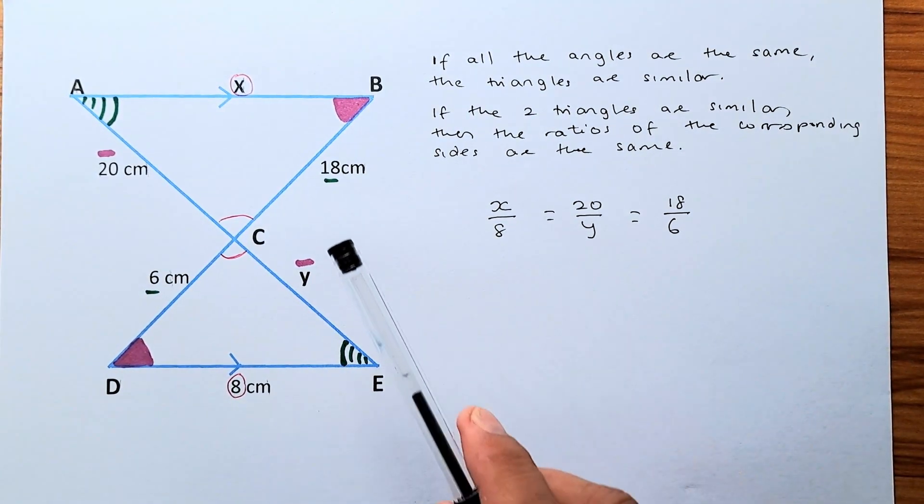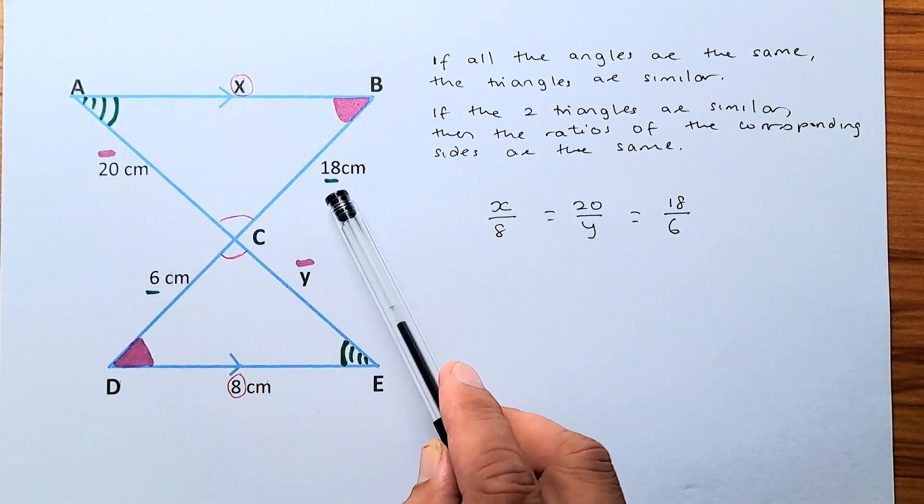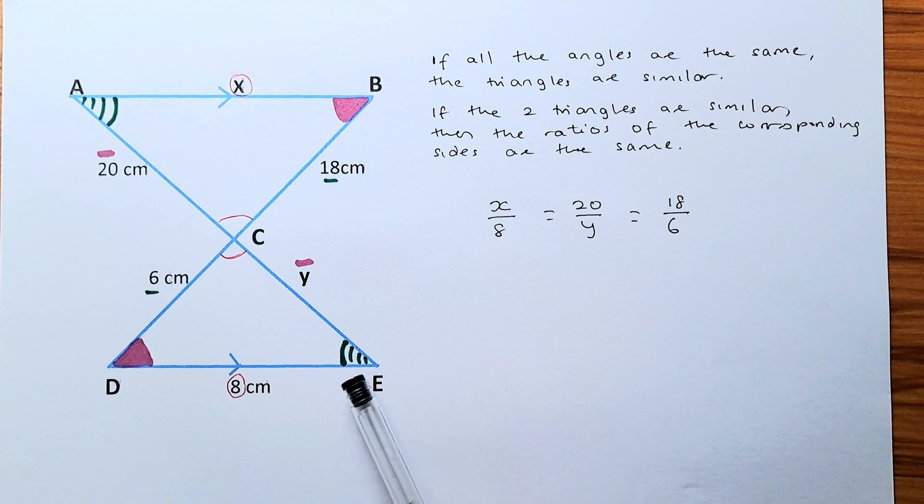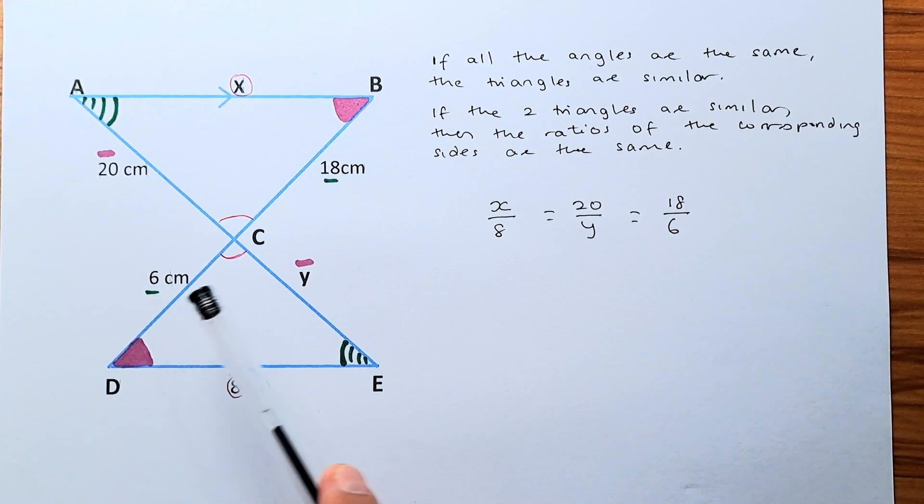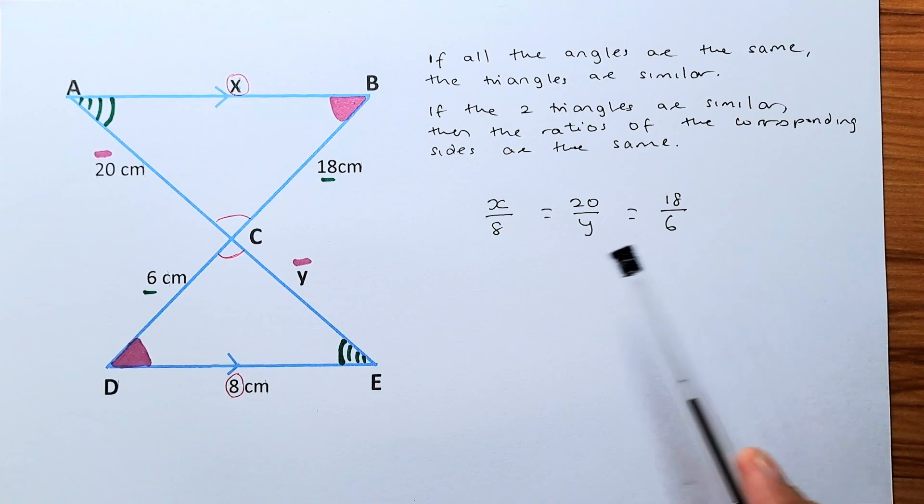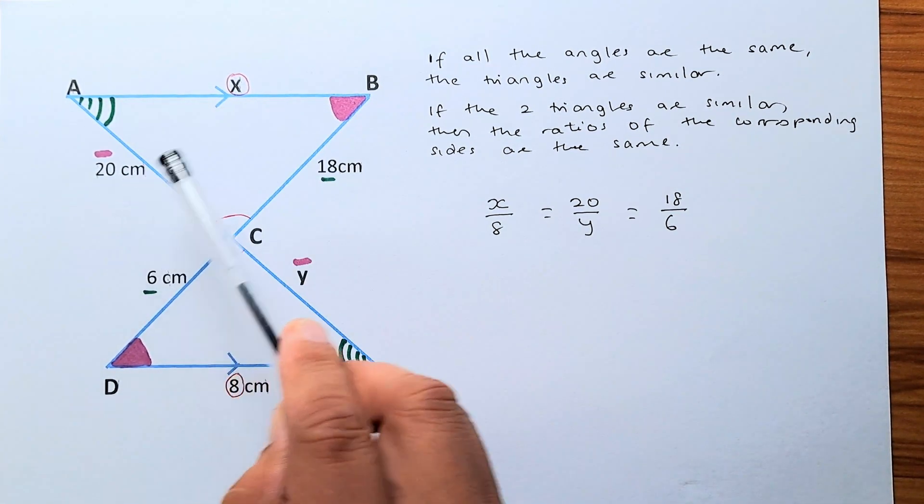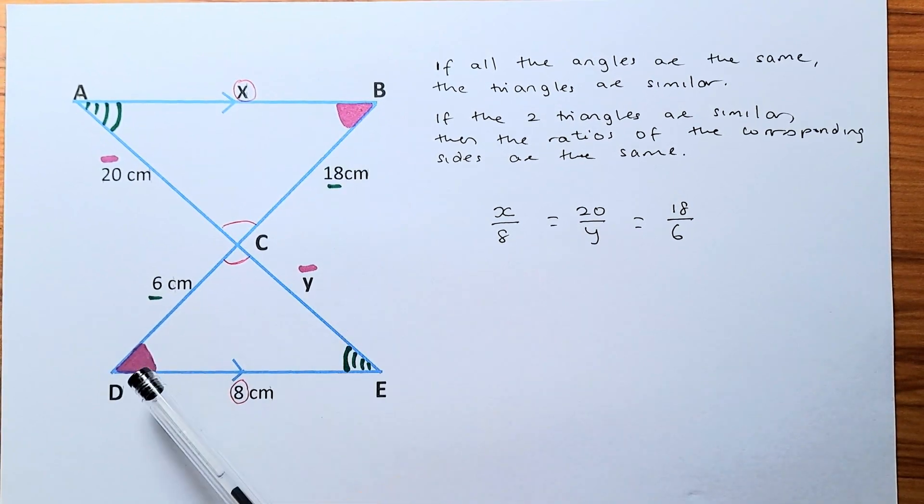Then the second side, angle A, the corresponding side is 18. And angle E, the corresponding side is 6. So 18 and 6 are corresponding. And similarly, 20 and Y are corresponding because 20 is opposite B and Y is opposite D. They are the same angles and sides.